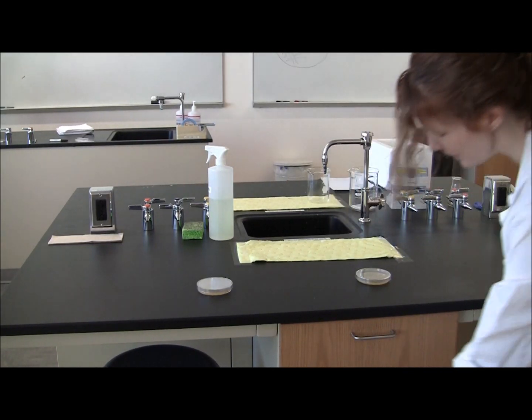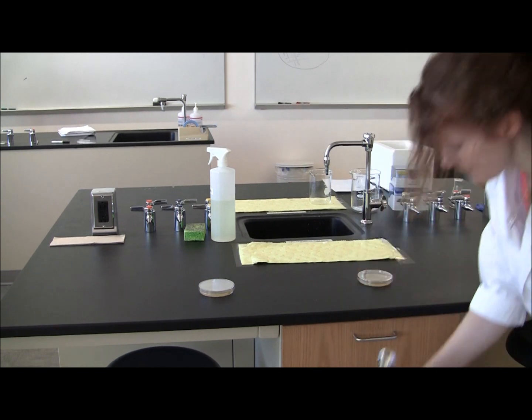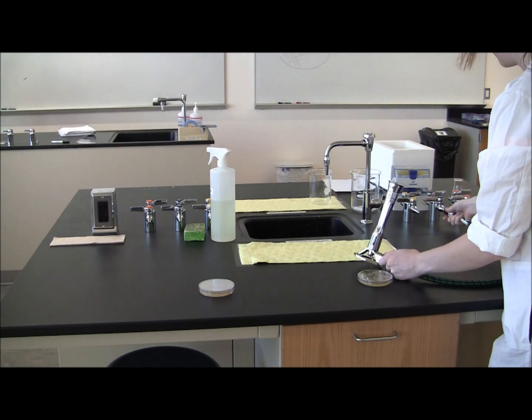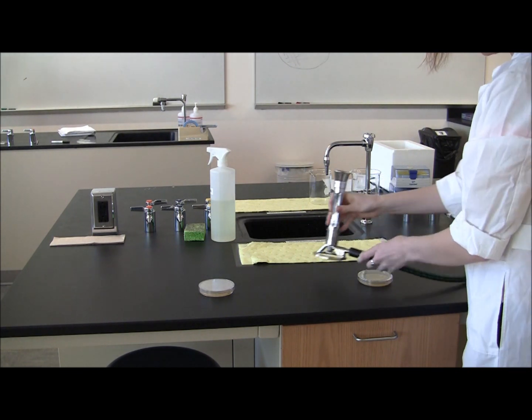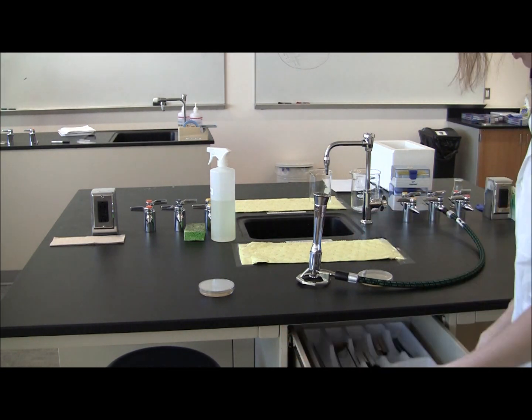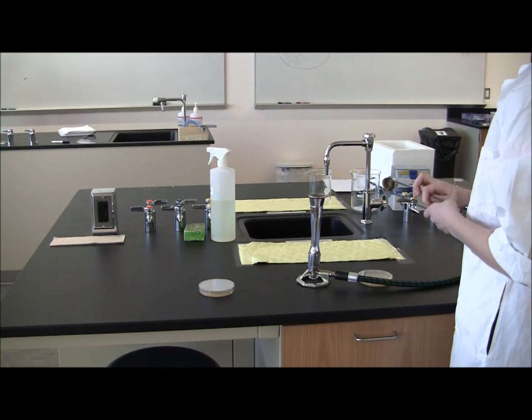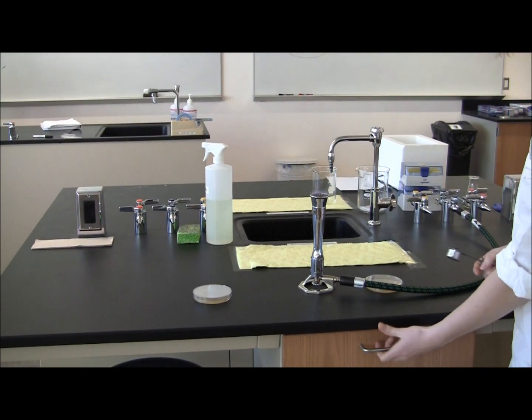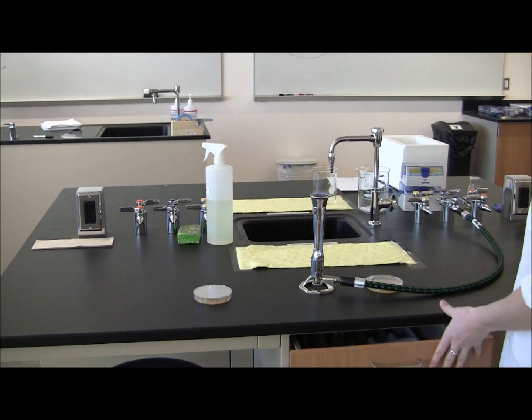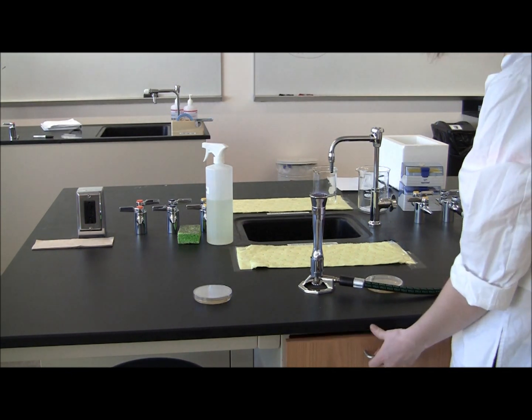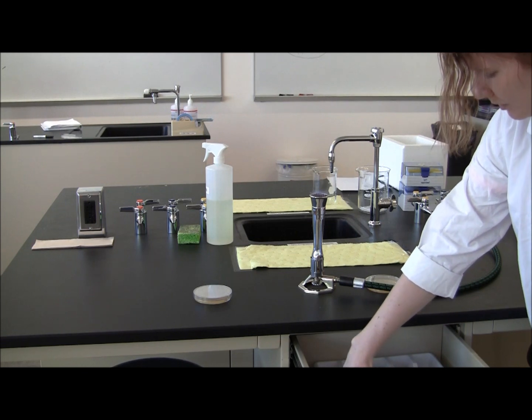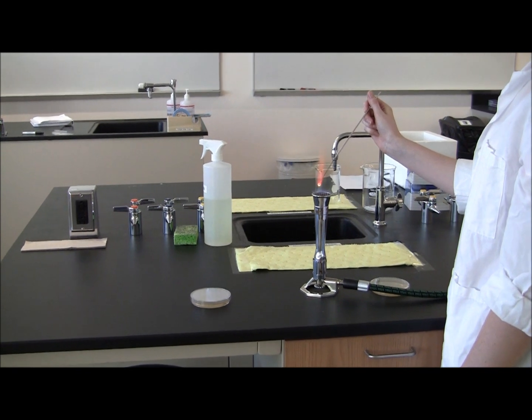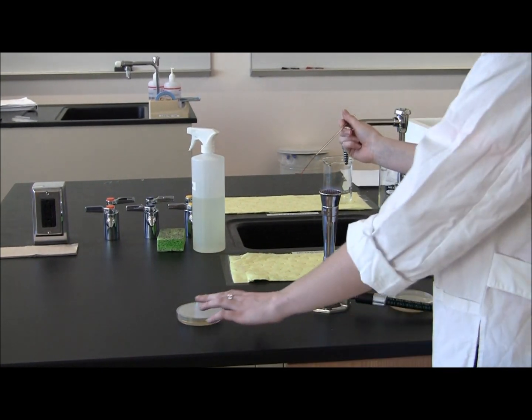First you need to take the Bunsen burner out, which is in the very bottom drawer. You need to plug it in nice and snug on the blue gas nozzle. Then take the striker out of the drawer, turn the gas on full, and light the gas using the striker. You won't be able to see the gas because it is natural gas in these labs. Then you'll take out your loop and flame it until it's red hot.